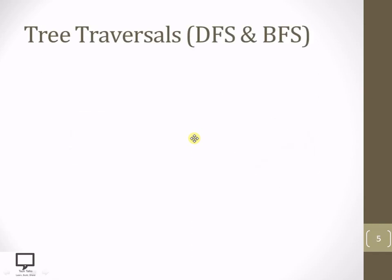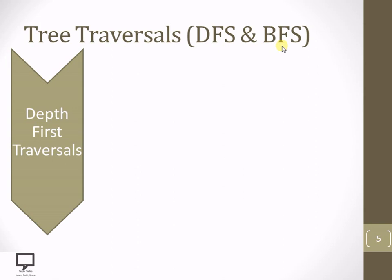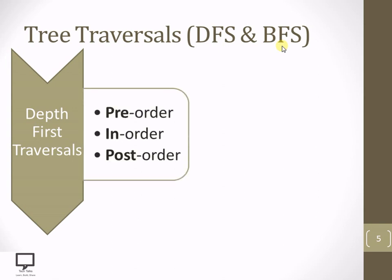Now let's see what are the different tree traversal techniques. Basically there are two tree traversal techniques. Tree is a non-linear data structure, so non-linear data structures can be traversed in different ways. The different ways are DFS and BFS. DFS stands for depth first search traversal technique and BFS stands for breadth first search traversal technique. Both these techniques depend on the way in which the tree gets traversed. The depth first traversal technique goes into depth and traverses the tree, and this DFS technique has three sub-types or ways with which we can traverse the tree.